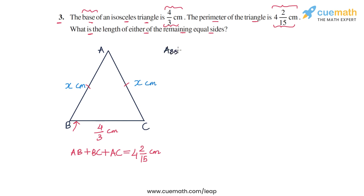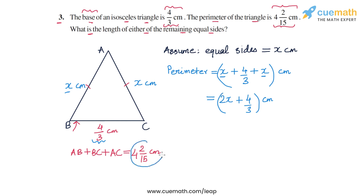So the first step will be to assume that the equal sides have length of x centimeter. Now what we will do is write the perimeter in terms of x. So the perimeter will be AB which is x plus BC which is 4 by 3 plus AC which is x again. So this is the perimeter and we can combine these two x terms to get 2x. So 2x plus 4 by 3 centimeters. This is the perimeter.